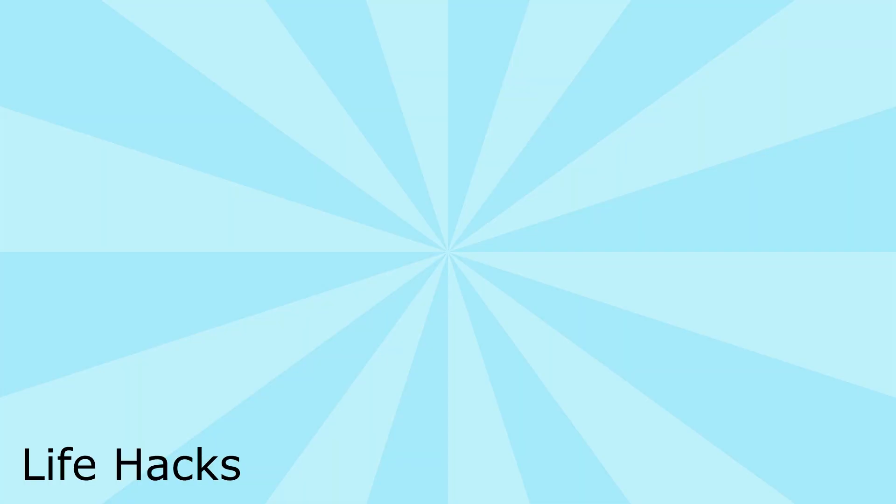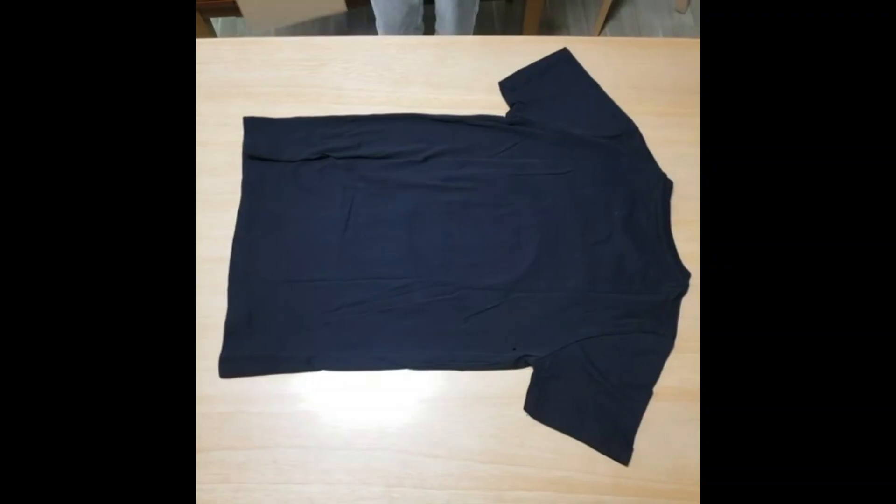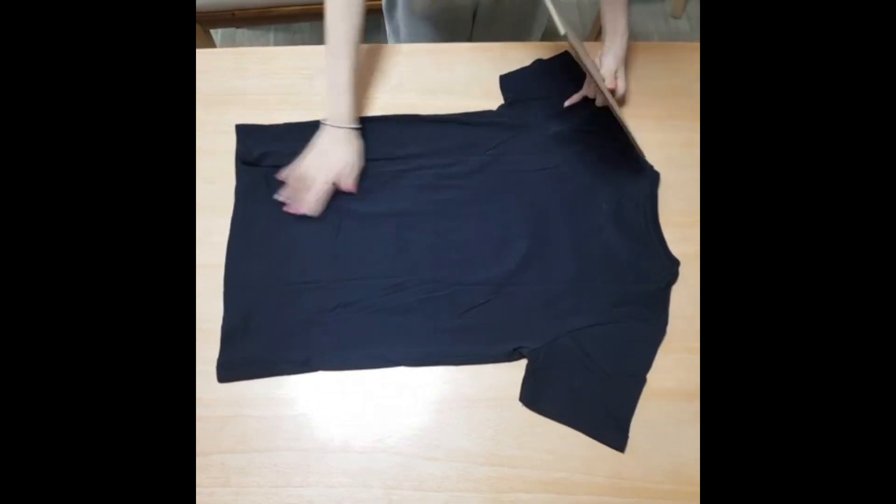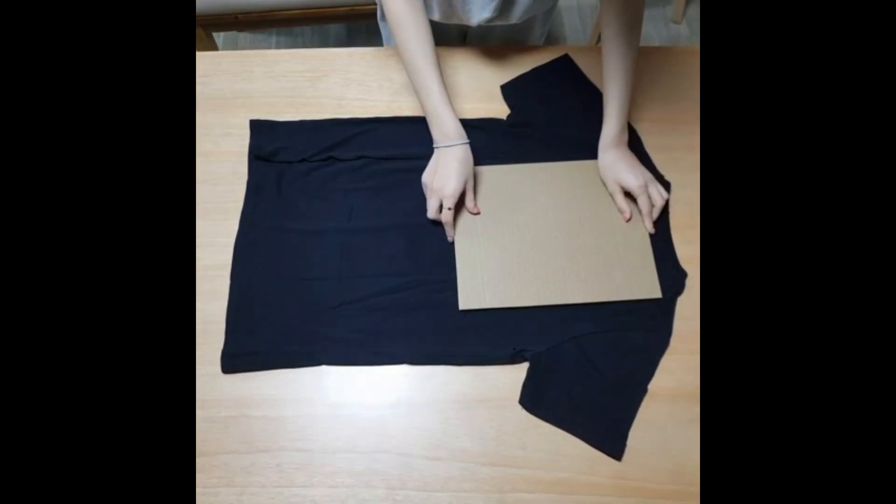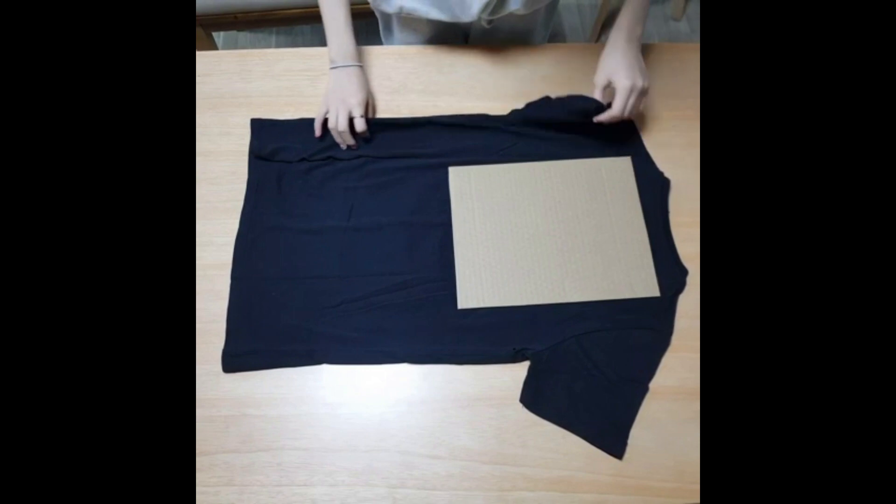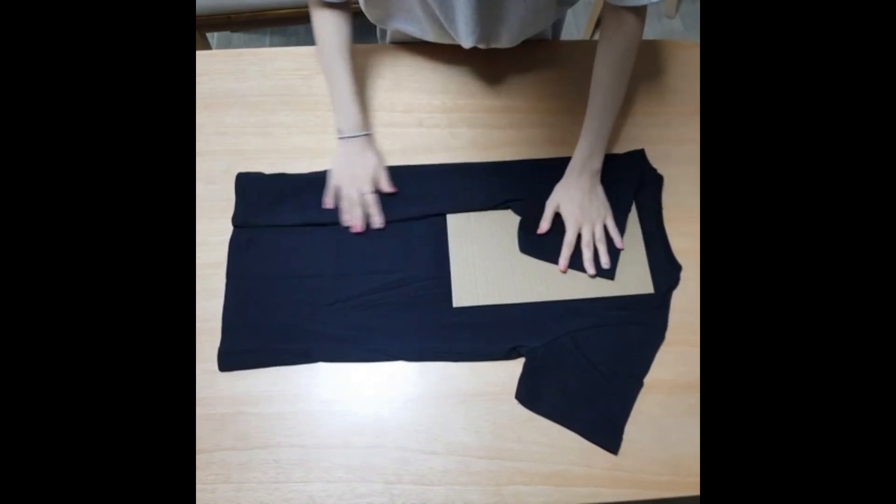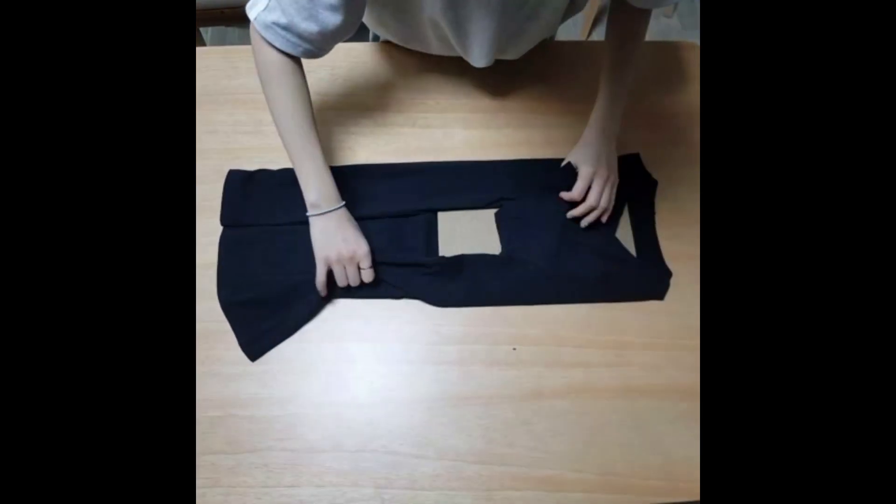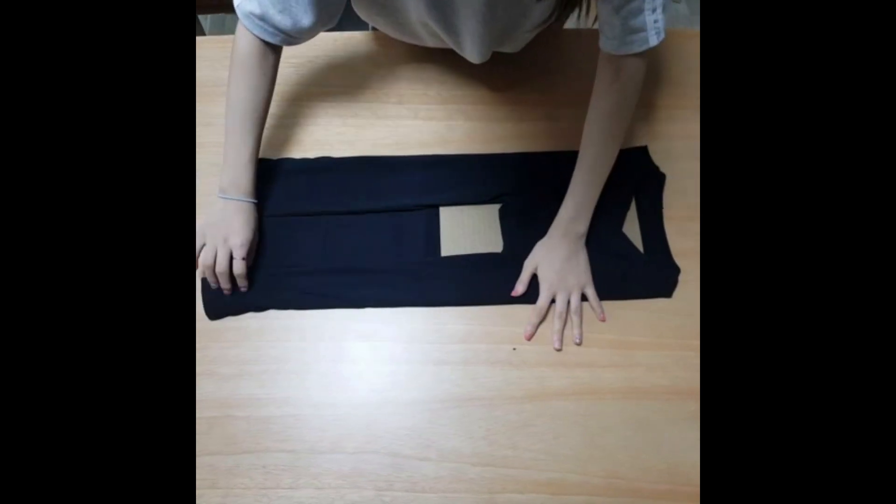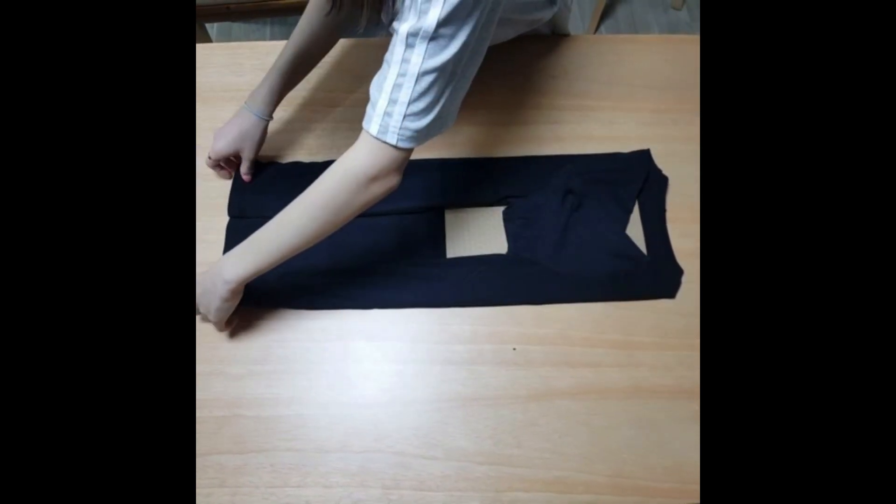First, I'm going to show you how to fold your own clothes. The materials you'll need is only cardboard. First, I'll place the cardboard under the neckline and fold it in order by sleeves and then fold the bottom hem so that it reaches the collar shoulder.